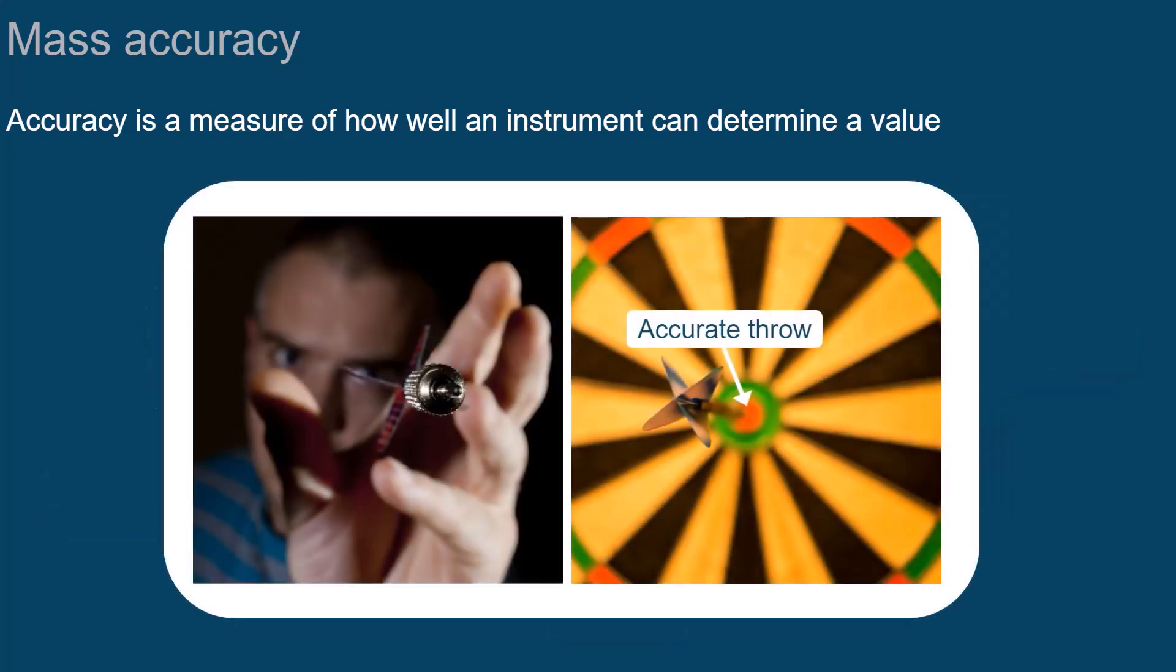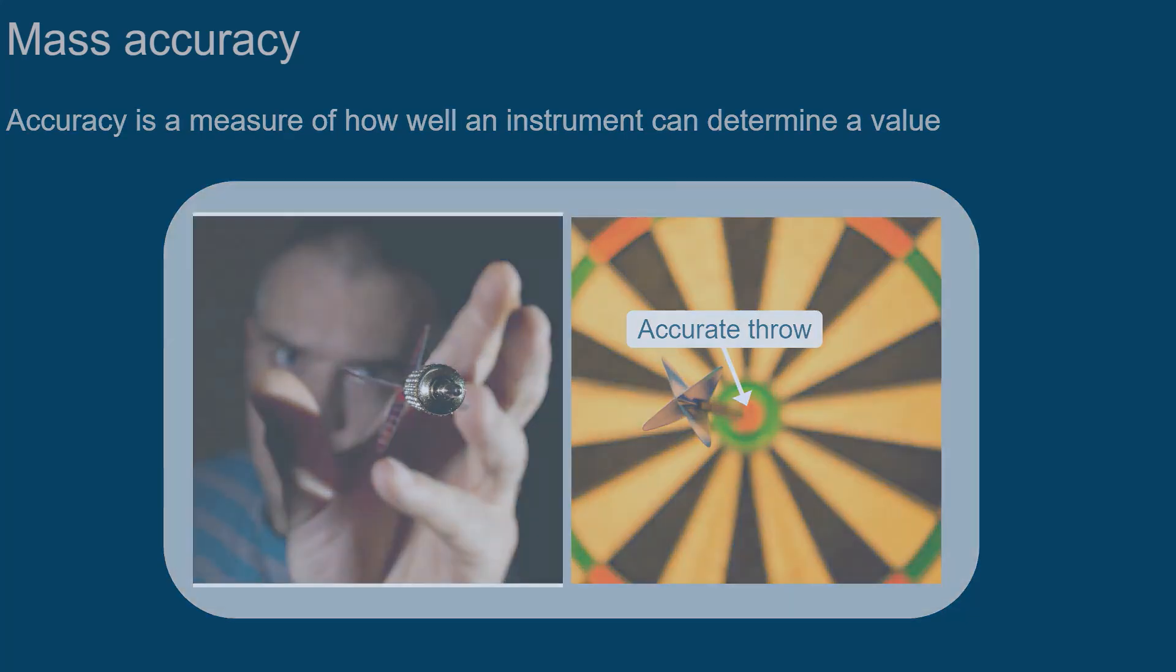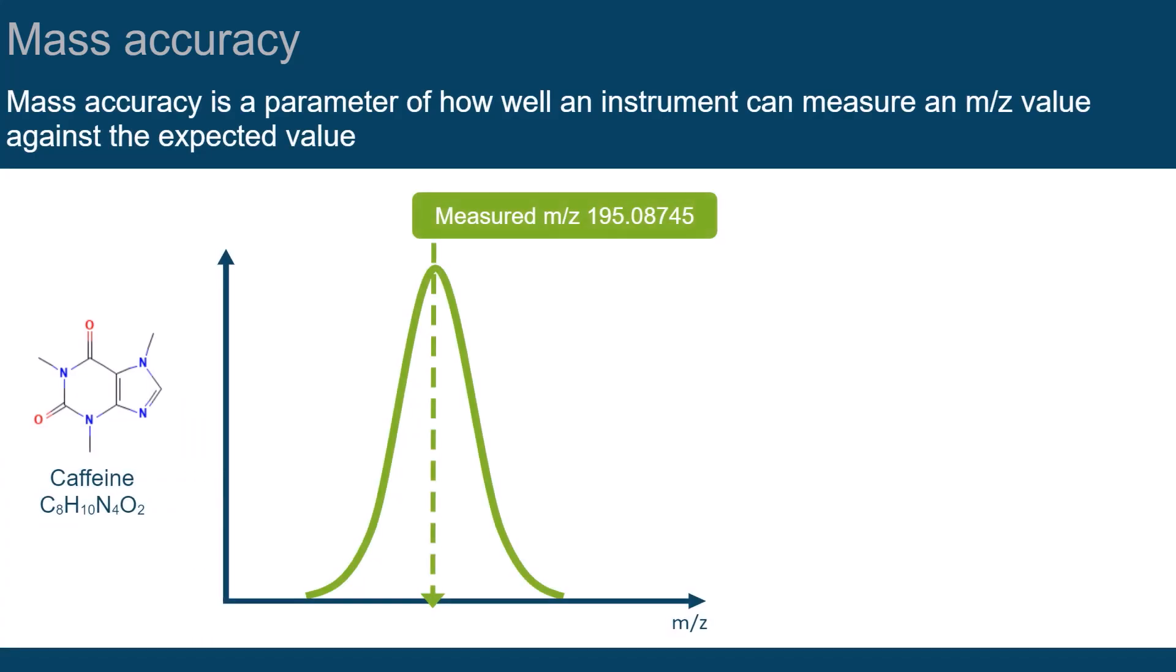You can also think of it like this. How close can you get with a dart to the bull's eye? That is the accurate target on a dartboard. In mass spectrometry, mass accuracy is a parameter of how well your instrument is able to measure the M over Z value of a molecule against the expected value.